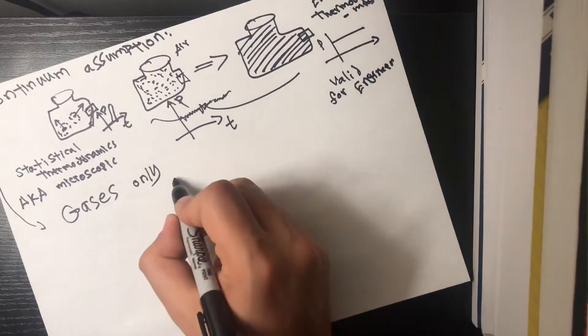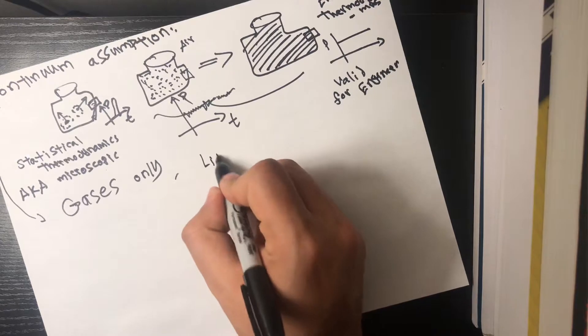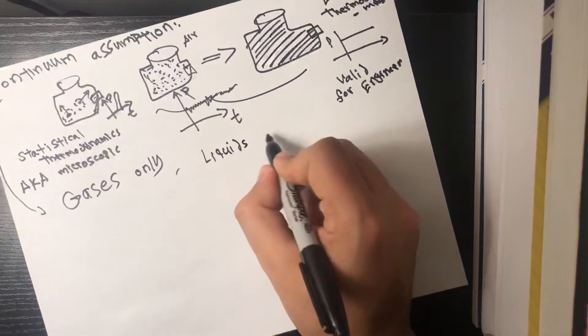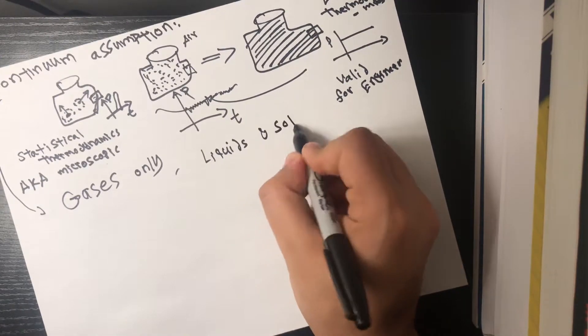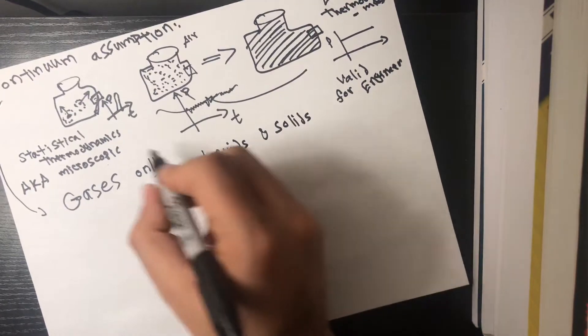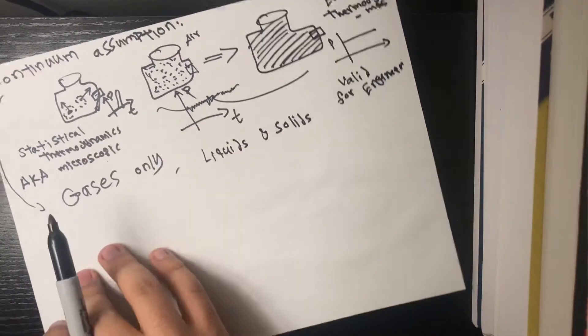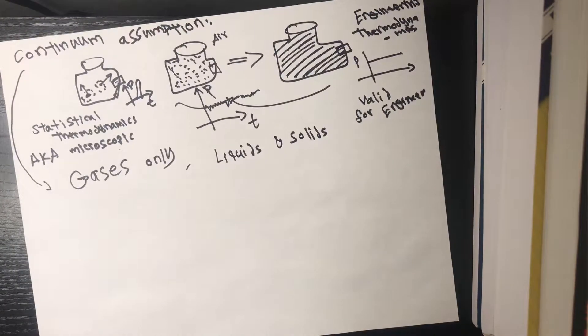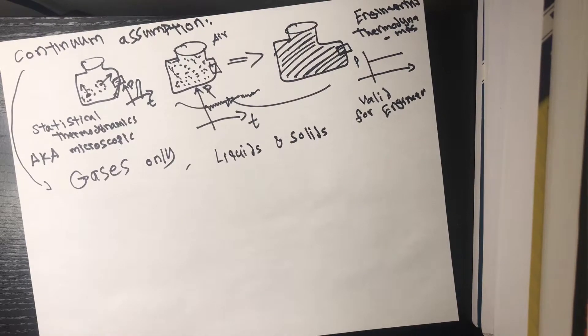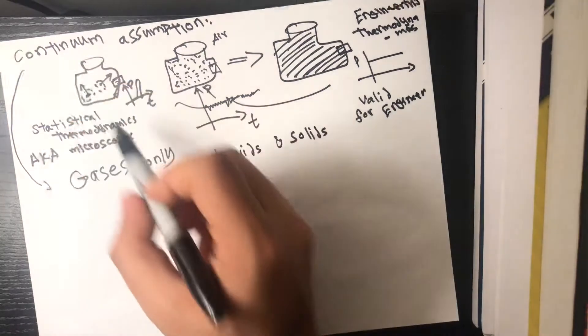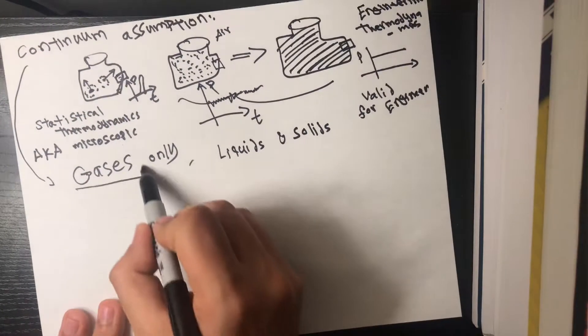If you think about it, in the case of liquids and solids, you're never gonna have this situation to the left. You're always gonna have that many molecules to create the phase of a solid or of a liquid. So this is usually brought up only in the situation of gases.